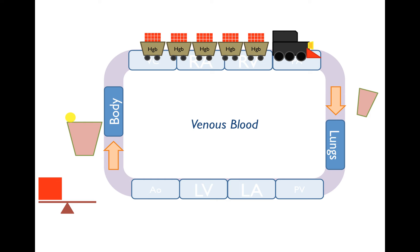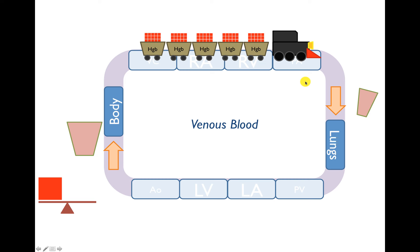We're going to put a train on this circuit. This train has a couple of hemoglobins in it — each hemoglobin is represented by a hopper or boxcar, with boxes inside representing how much oxygen each hemoglobin is carrying. The boxes can get up to four high, so we're saying this is a hemoglobin saturation of about 75%, similar to the venous circulation. The train has just come back from the body — it's in the vena cava, right atrium, right ventricle, pulmonary artery, and it's ready to get out to the lungs to get oxygenated. This is venous blood.